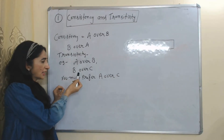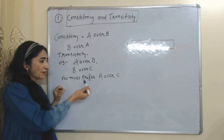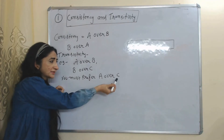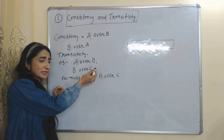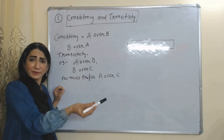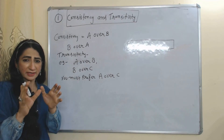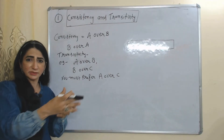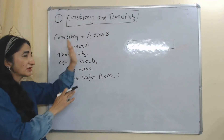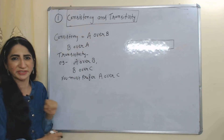Transitivity means your choices should show consistency with each other. For example, if you like A over B and B over C, then you must prefer A over C. You can't prefer C over A, because C is your least preferred choice. In order to make a valid social decision, individual behavior must show consistency and transitivity.